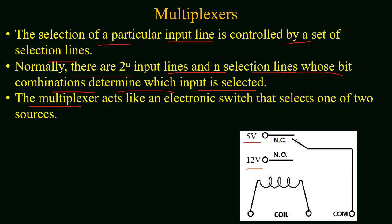The normally closed terminal of a relay is attached with 5 volt and the normally open terminal is attached with 12 volt. If the device runs with 5 volt then the normally closed terminal will be used, and whenever 12 volts are required at the output then we will use the normally open terminal. So in this case a multiplexer acts like an electronic switch that selects one of the two voltage sources.